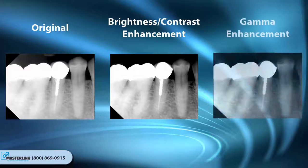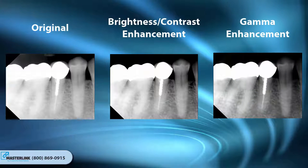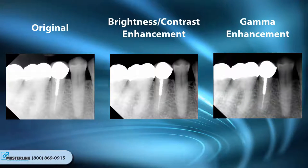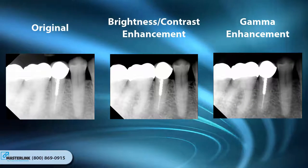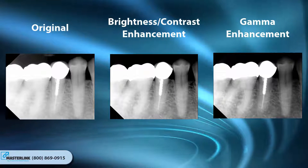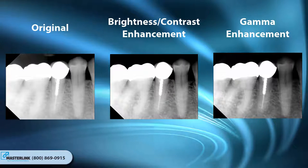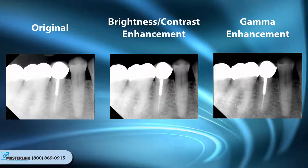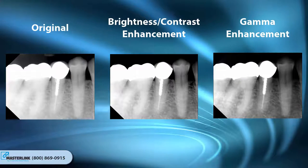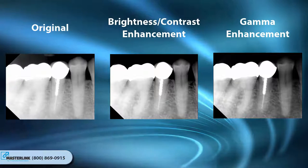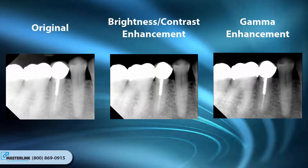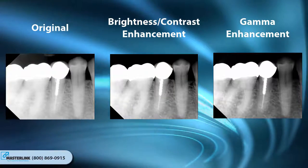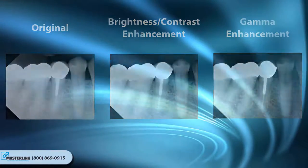Gamma Correction differs from standard brightness enhancements. It dynamically adjusts each pixel to prevent washout at the extreme light and dark ends of the spectrum. Usually, Gamma Correction is used in combination with one of the other Brightness Contrast enhancement tools to dramatically improve the overall appearance of an image.